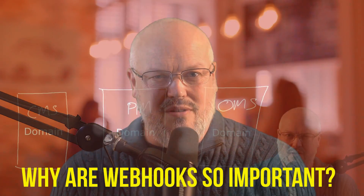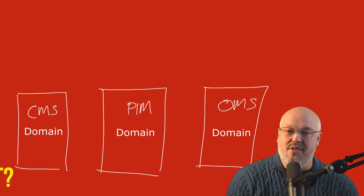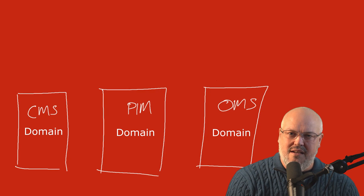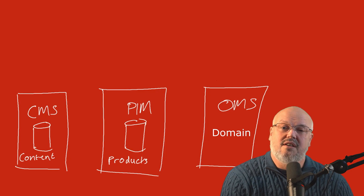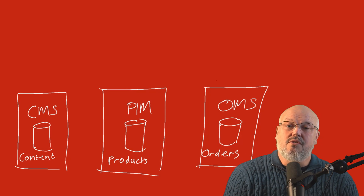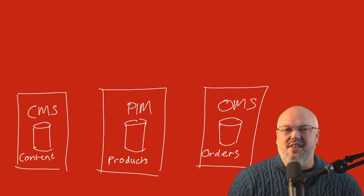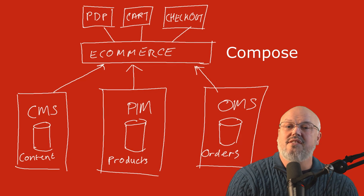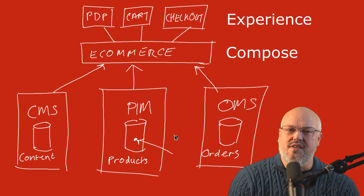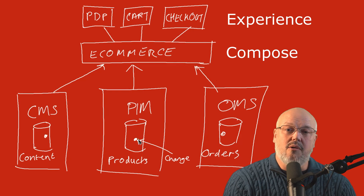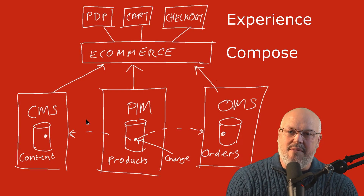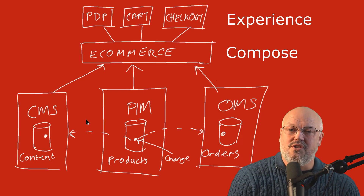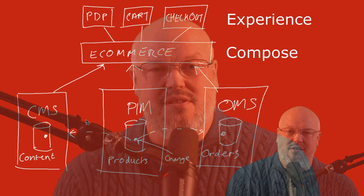Why are webhooks so important? When you're building a larger platform from other systems, each system should be concerned about its own domain. A CMS should only be concerned about managing content, the PIM should only be concerned about managing product, and an order management system should only care about managing orders. These data sets are composed together in the customer experience. However, there may be dependencies where one change in one system requires an update in another — and we shouldn't rely on polling and duplicating data. Webhooks allow you to make these small adjustments across many different systems when the event actually happens, composing digital experiences from many systems.